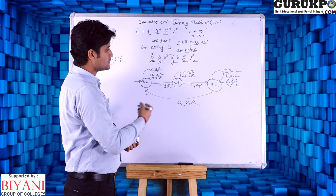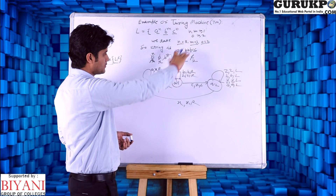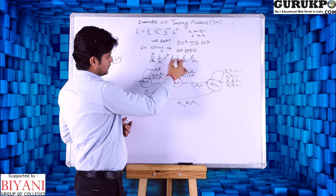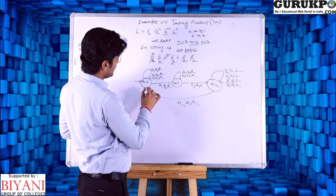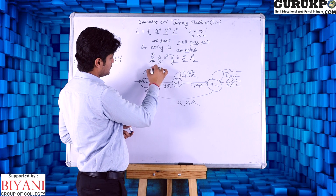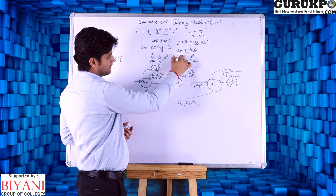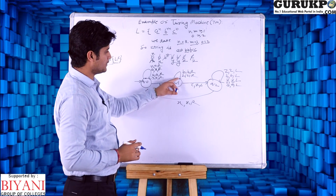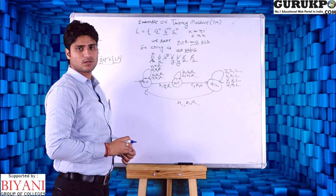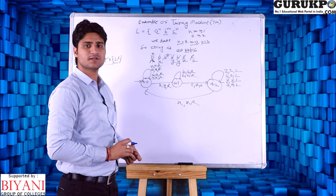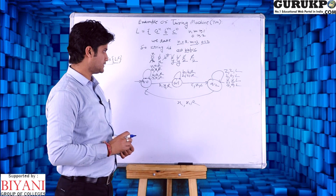The same process continues. Bypassing symbols as we go: B bypass, A bypass, X bypass — same process. Another X bypass, Y bypass, Y bypass. B will be replaced by Y and we move to next state Q1. Z will be bypassed moving right, then all the string will be crossed. This is the process of the Turing machine — one by one we replace symbols and move in both directions, left and right.